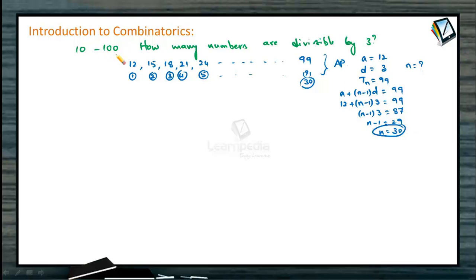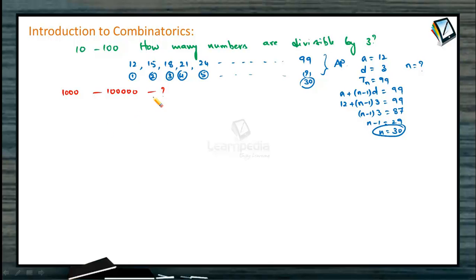Here we are counting only 2-digit numbers, so physically counting 1st, 2nd, 3rd, 4th, 5th, and so on up to 99 is still possible. But if the same question asked for numbers between 1000 and 1 lakh divisible by 3, virtual counting would not work — there are too many numbers and it becomes too time-consuming.